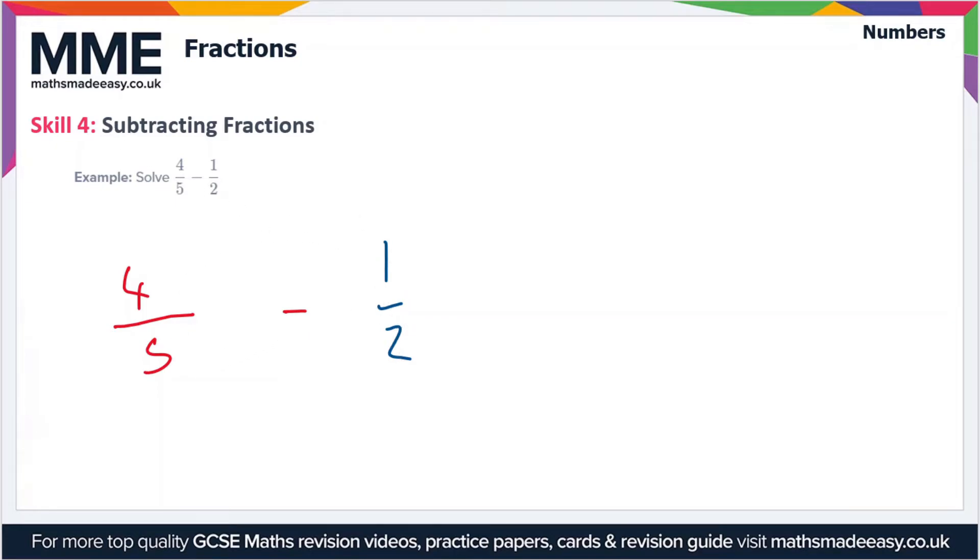To find our common denominator we use exactly the same technique as before. We multiply the numerator and the denominator by the opposite denominator. So this becomes four times two over five times two, and the other one becomes one times five over two times five. Let's deal with this first fraction: four times two is eight and five times two is ten, so we get eight over ten.